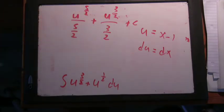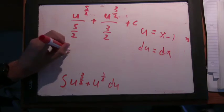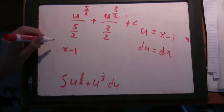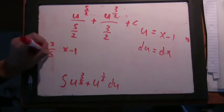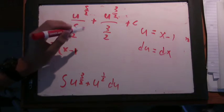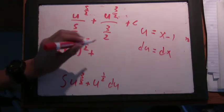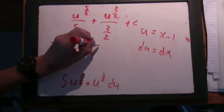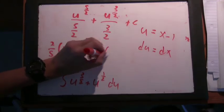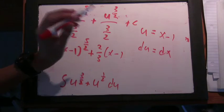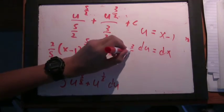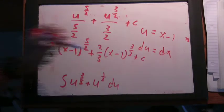It is x minus 1. Actually, I'll do 2 fifths times x minus 1 to the 5 halves, plus 2 thirds times x minus 1 to the 3 halves. Very good.